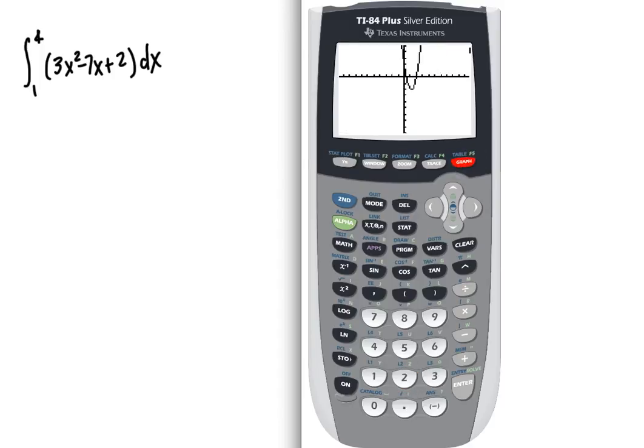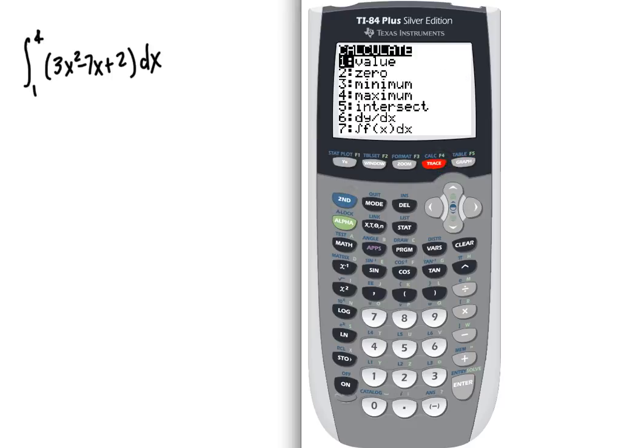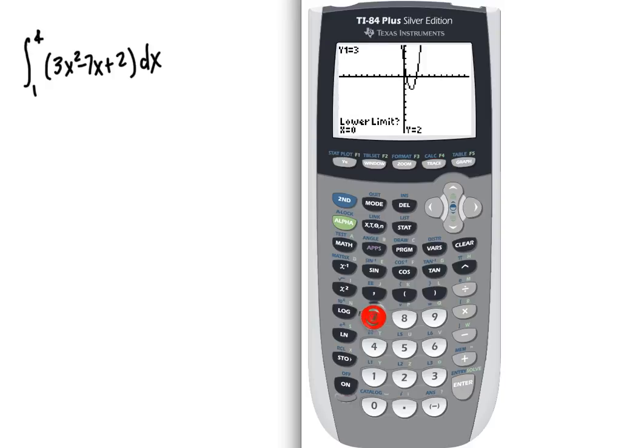You would choose to graph it and then hit the second and the trace key. And you'll see that choice seven is the integral. You just type in your lower limit of one, your upper limit of four, and it'll shade it in for you and give you your answer. So that's how you can use the TI-83 and the TI-84 to find a definite integral.